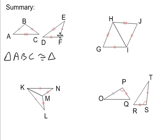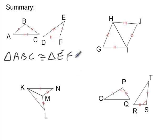E is between the one and three marks, so E corresponds with A. B is between one and two marks, and F is between one and two marks. The only letter left over is D. So triangle ABC is congruent to triangle EFD — by the side-side-side postulate.